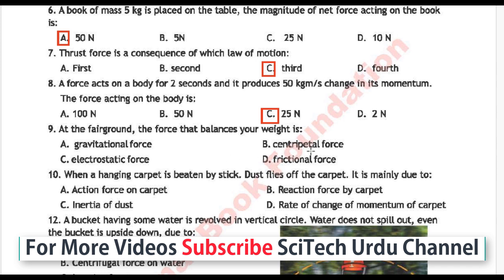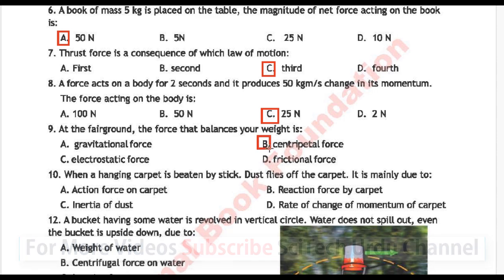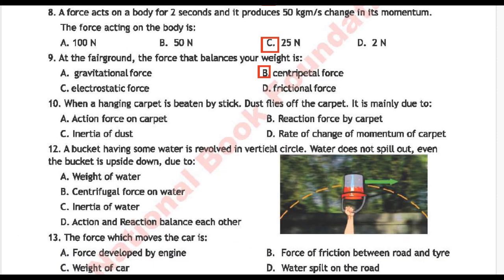Next question 9: At the fairground, the force that balances your weight is — Option A: gravitational force, Option B: centripetal force, Option C: electrostatic force, Option D: frictional force. Correct answer is Option B: centripetal force.